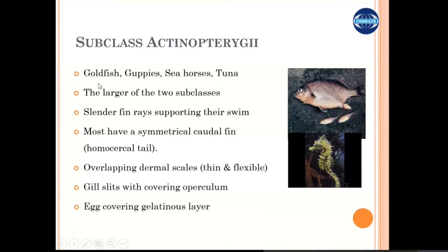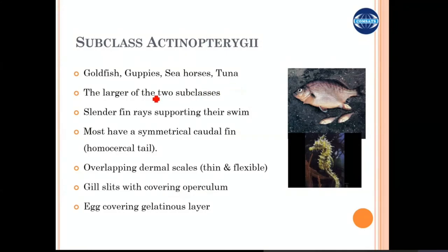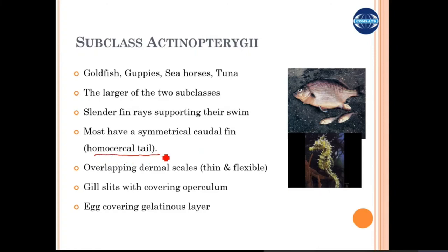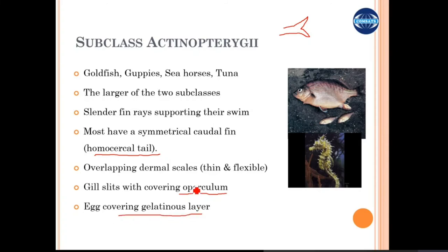Class Actinopterygii includes the most familiar fish such as goldfish, guppies, seahorses, tuna, and others. It is the larger of the two subclasses. The fins are slender in the form of rays, and their caudal fin is homocercal — meaning the tail fins are identical in size and structure. They don't need extra thrust to lift their body due to the presence of the swim bladder. Dermal scales are present, gill slits are covered with the operculum, and eggs are gelatinous and laid in water.